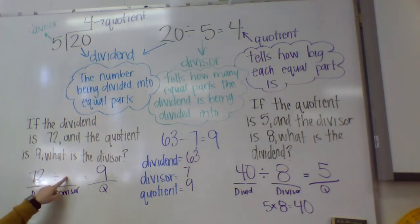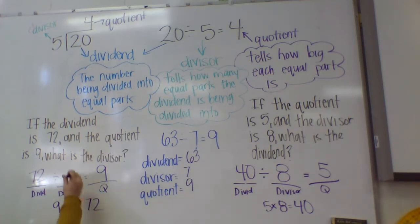72 divided by what equals 9? Well, think about multiplication. That's your inverse. 9 times what equals 72? We know that's 9 times 8. So your divisor would be 8. 72 divided by 8 equals 9.